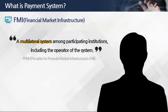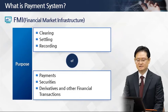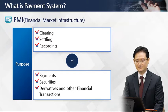Likewise, governments also have to provide infrastructures for financial transactions, and we call it FMI, or Financial Market Infrastructure. According to PFMI — Principles for Financial Market Infrastructure of BIS, Bank for International Settlement — FMI is defined as a multilateral system among participating institutions, including the operator of the system. It is used for clearing, settling, and recording of payments, securities, derivatives, and other financial transactions.